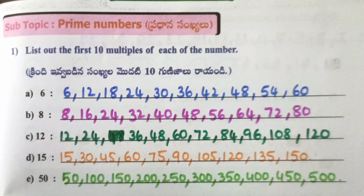B. 8: 8, 16, 24, 32, 40, 48, 56, 64, 72, 80. C. 12: 12, 24, 36, 48, 60, 72, 84, 96, 108, 120.